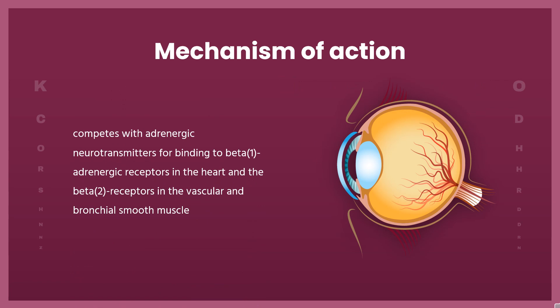Timolol competes with adrenergic neurotransmitters for binding to beta-1 adrenergic receptors in the heart and beta-2 receptors in the vascular and bronchial smooth muscle. This leads to diminished actions of catecholamines, which normally bind to adrenergic receptors and exert stimulatory effects, leading to an increase in blood pressure and heart rate.